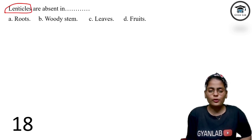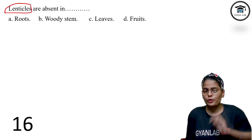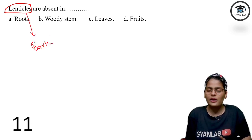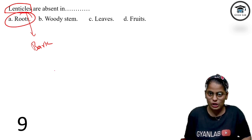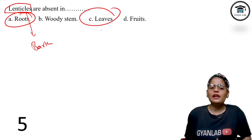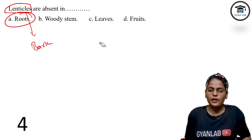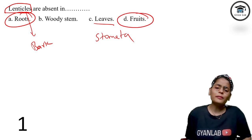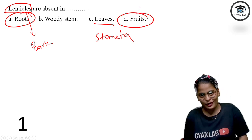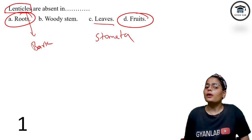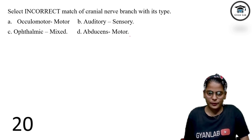Where are lenticles present? We saw a related question in part 2. Lenticles are always present in the bark of large trees. They are also present in roots that come out underground. Lenticles are never present in leaves, because leaves have stomata. Lenticles are also present in fruits. So lenticles are present in bark, roots, and fruits — but not in leaves.